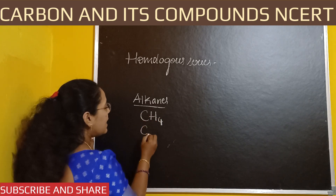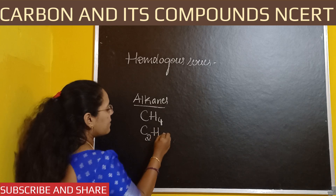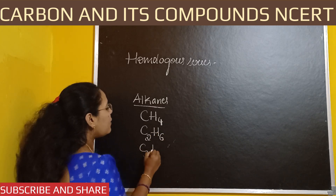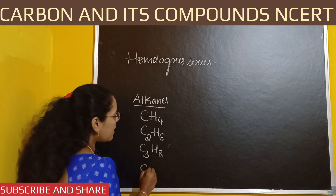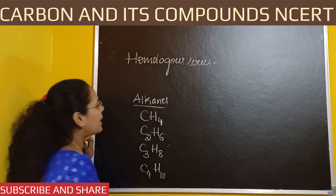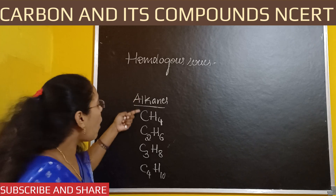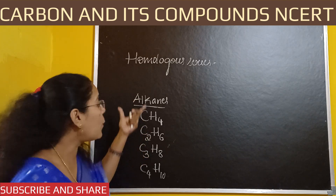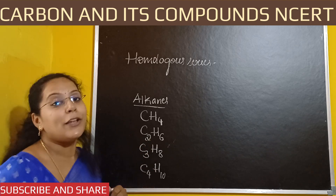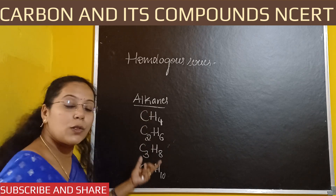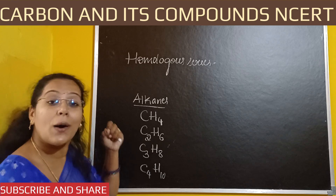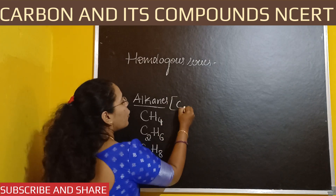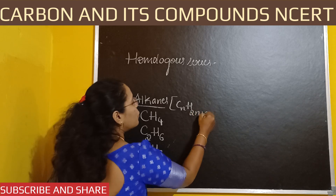The third member is C3H8, and the fourth member is C4H10. They are all organic compounds, they all belong to the alkanes group. The general formula of alkanes is CnH2n+2. They have the same general formula but similar chemical properties.